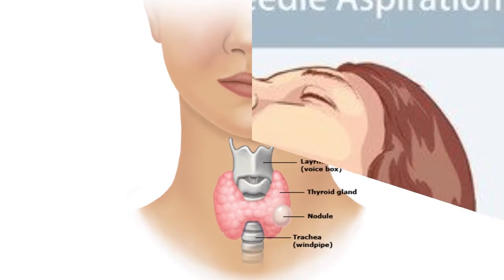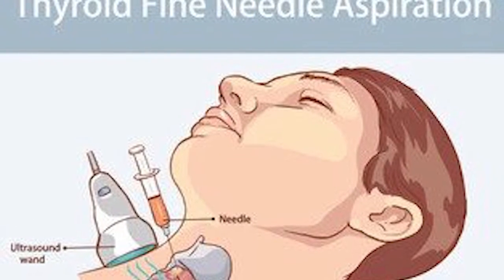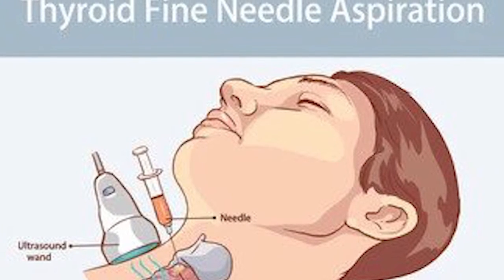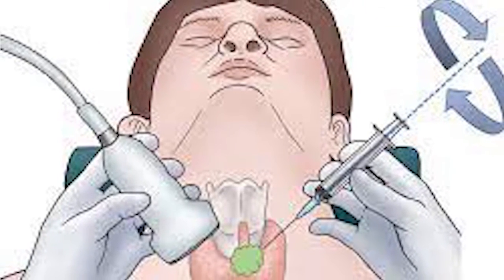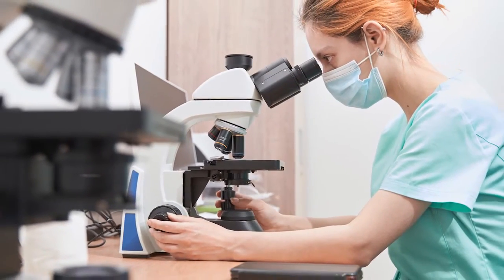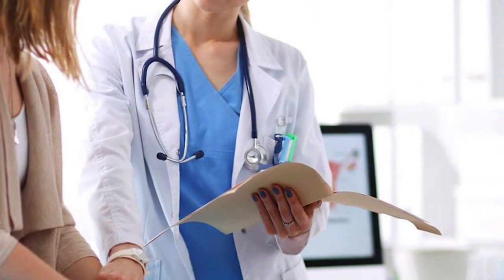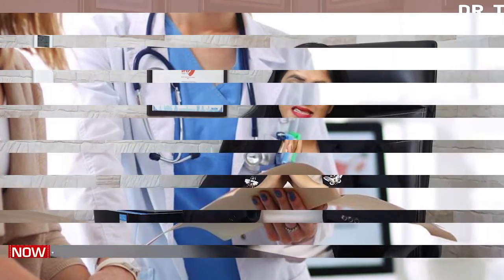When we see a single nodule, we also ask the patient to undergo FNAC — fine needle aspiration cytology. In this test, a syringe and needle are inserted inside the nodule and some fluid is extracted. This fluid then undergoes microscopic examination to find out whether there are any cancerous cells or not, and if yes, treatment is planned accordingly.